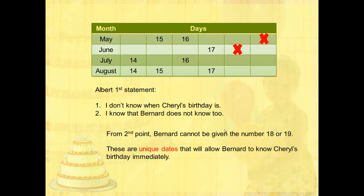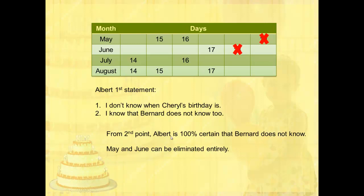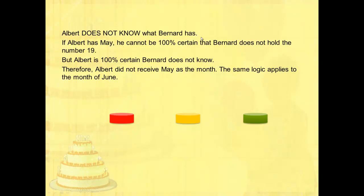Now we can delve into the second point further. Albert is 100% certain that Bernard does not know, so May and June can be eliminated entirely. The reason is: if Albert has May, then he cannot be 100% certain that Bernard does not hold the number 19. But Albert claims he is 100% certain, so Albert must not have received May as the month. The same logic applies to the month of June.